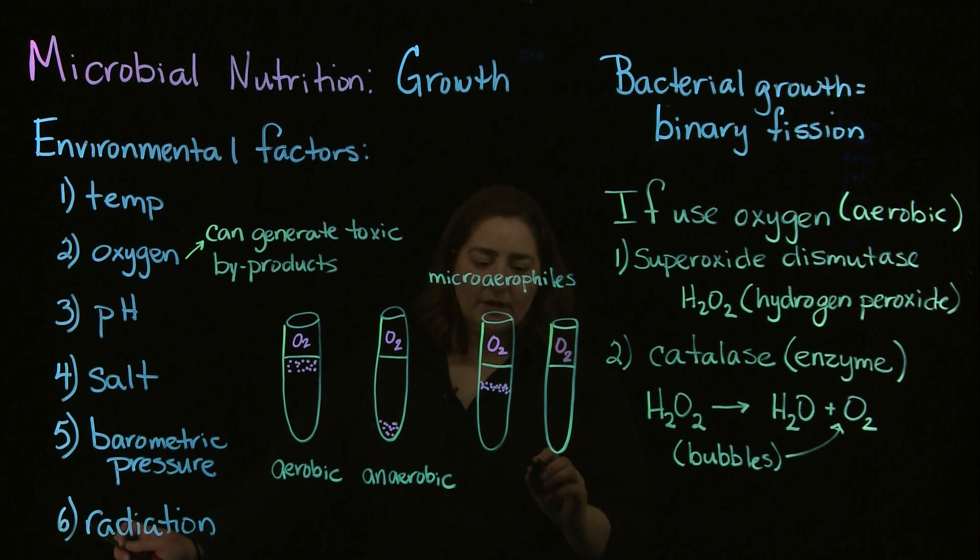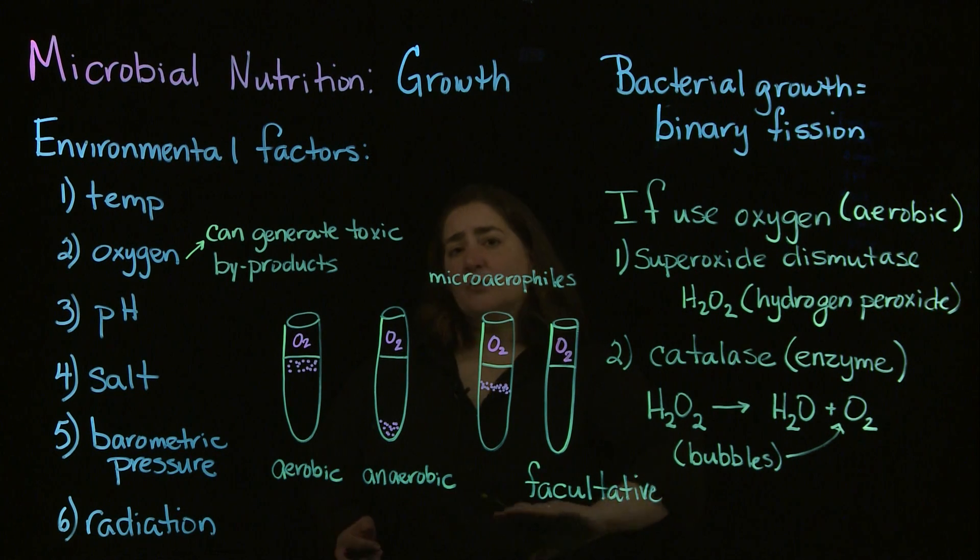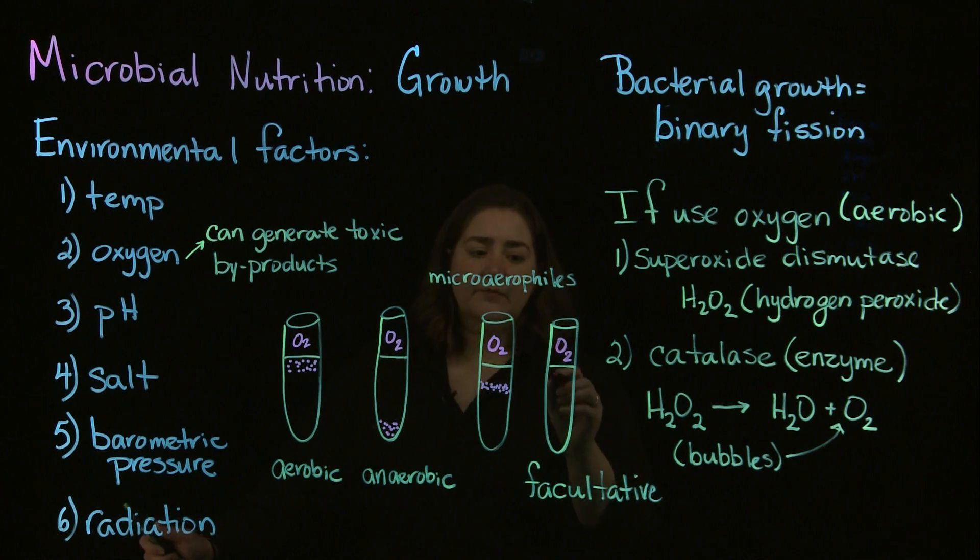Our next classification is facultative bacteria. Some books call them facultative anaerobes, others facultative aerobes. Just remember them as facultative. They're typically facultative aerobes and grow best with a little bit of oxygen.